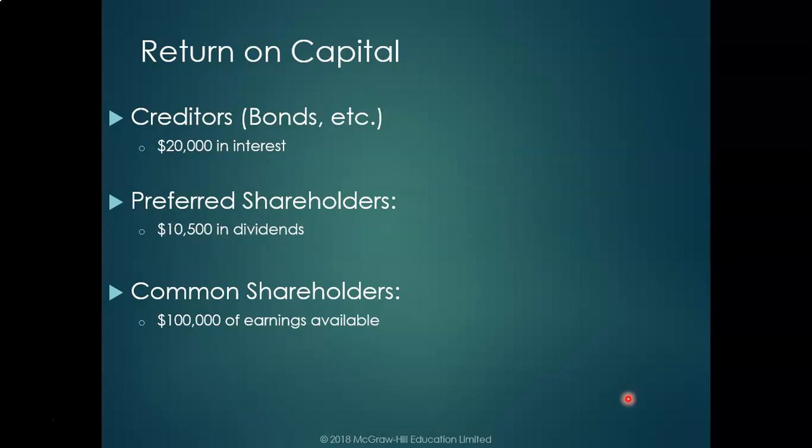Next, preferred shareholders receive dividends of $10,500 per year. Common shareholders have $100,000 in earnings available that could be distributed as dividends. Normally, a percentage of that is paid out — for example, the company might pay $5 per share or $1 per share, depending on dividend policy.